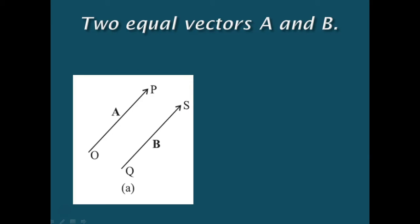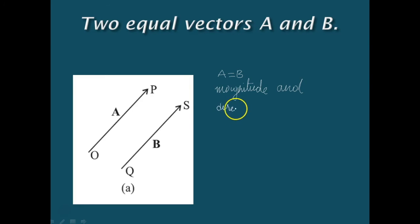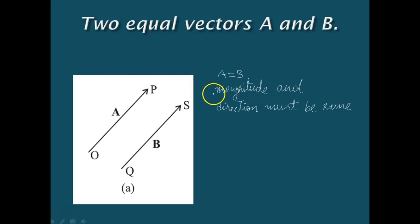In general, equality is indicated as A equals B. If two vectors A and B are equal, we write vector A equal to vector B. When we say two vectors are equal, it means the magnitude and direction of those two vectors are both the same.